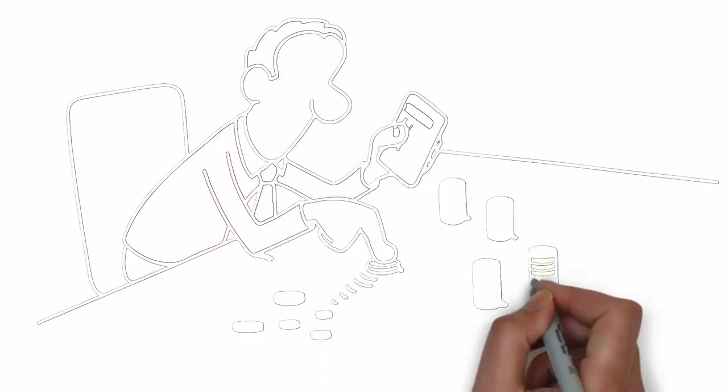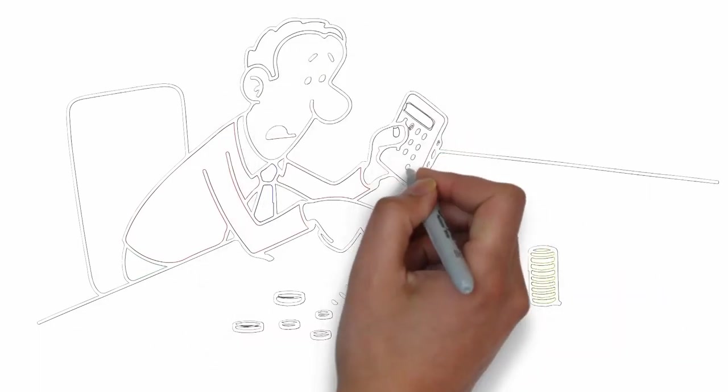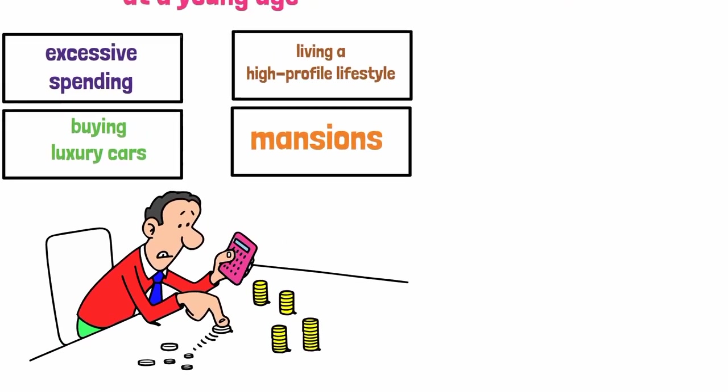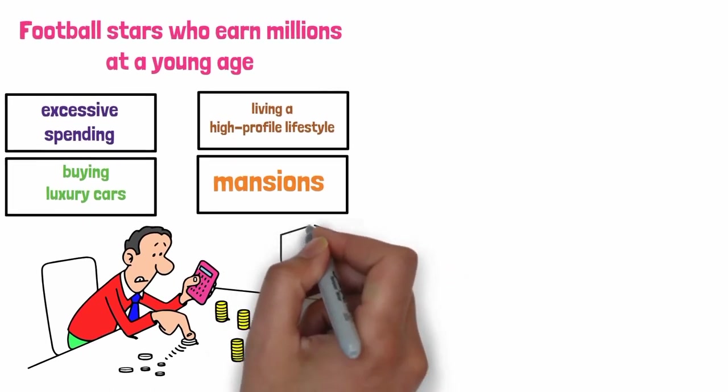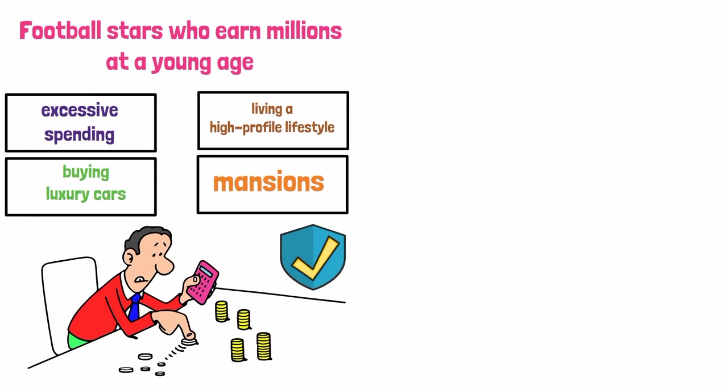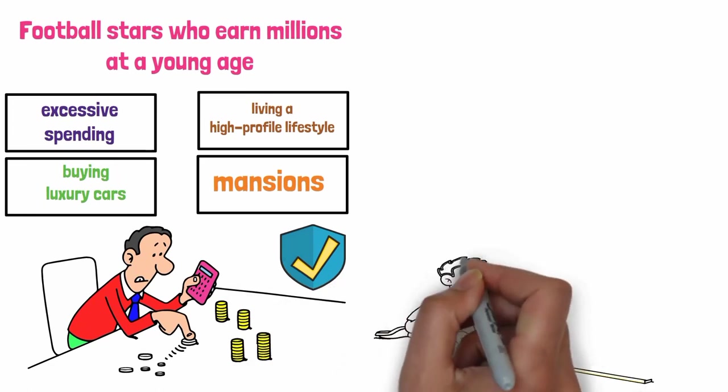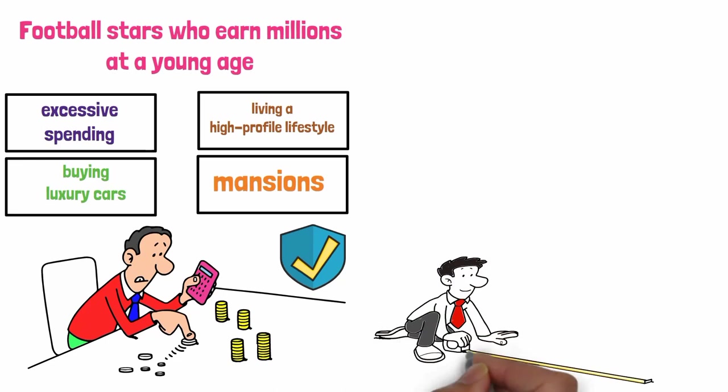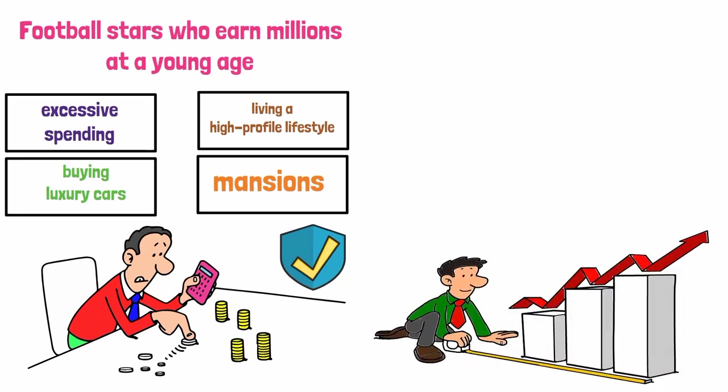Next, understanding the difference between price and value, a fundamental principle of value investing, is another crucial factor. Wealthy individuals like Warren Buffett invest in assets that they believe are undervalued by the market but have strong fundamentals and potential for growth.